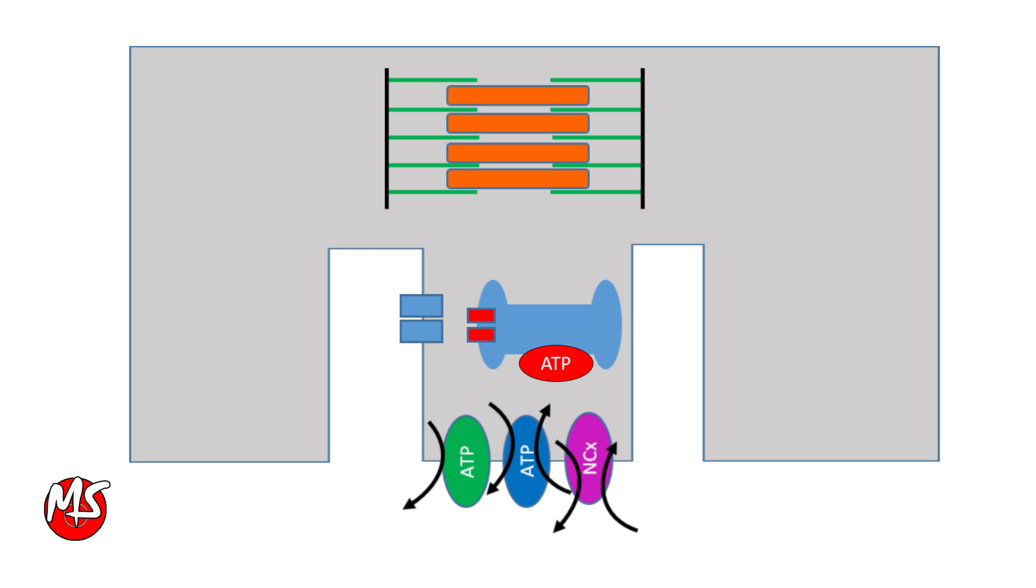T-tubules contain extracellular fluid, so they contain calcium, and L-tubules are also rich in calcium. When depolarization occurs, the voltage-gated calcium channels open and allow calcium from extracellular fluid to enter sarcoplasm. This intracellular calcium activates the voltage-gated calcium channels in terminal cisterns of L-tubules, so there is an increase in calcium concentration in sarcoplasm.